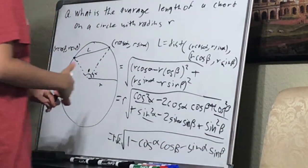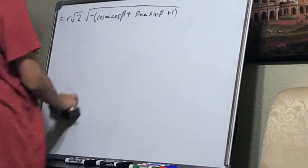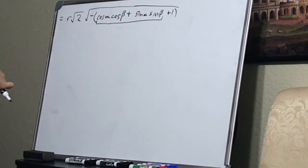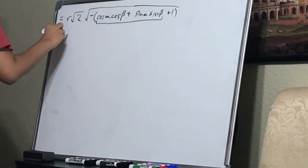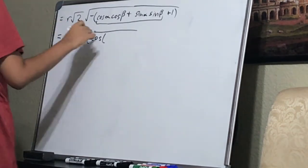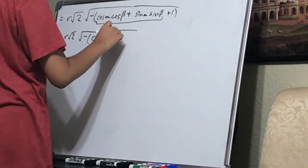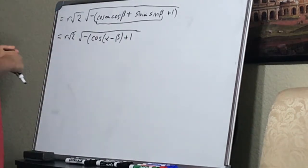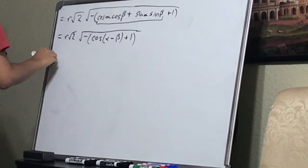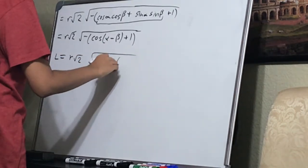We can use the angle difference identity for cosine and we get R root two times the square root of one minus cosine(α minus β). We just turned that huge expression into this. And putting the negative back in, we get L equals R times the square root of two times the square root of one minus cosine(α minus β).